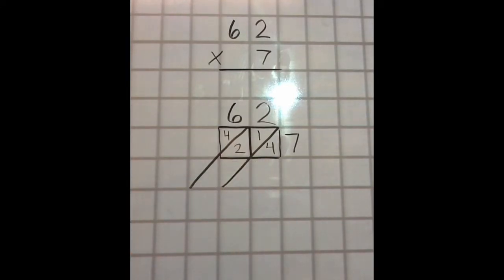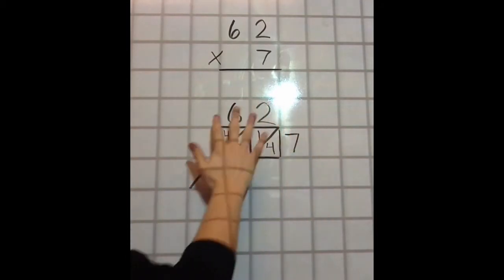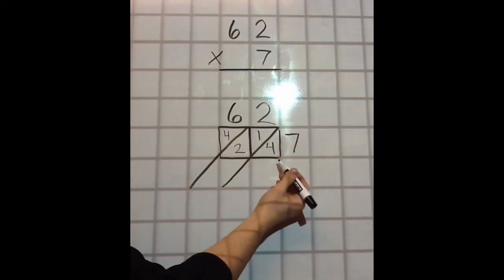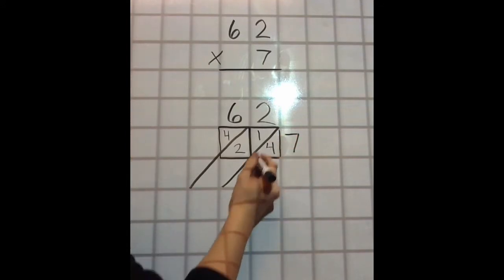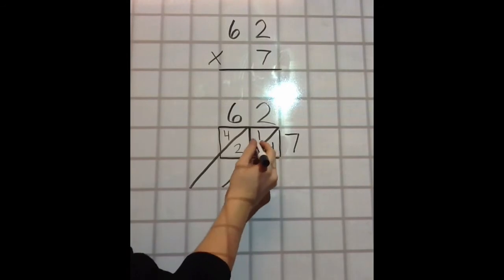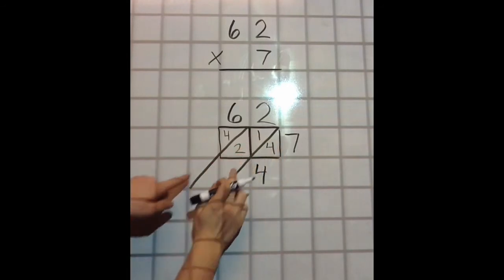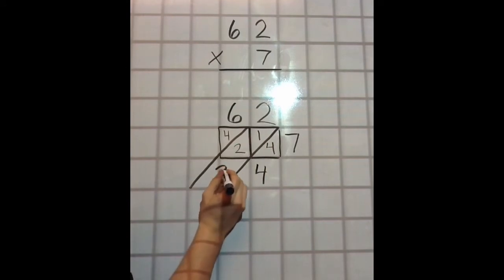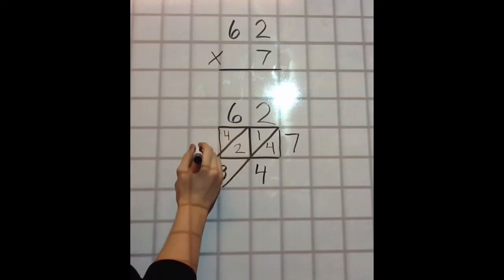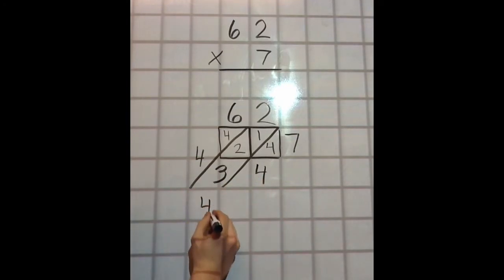Now, from this point, we start adding. And we can actually forget about these outside numbers if we need to. But we'll start at the right, and we'll go 4. And we're adding like this. Then we go to the middle section between these two diagonal lines. It's 1 plus 2, which is 3. And then on the outside is 4. And there's your answer, 434.